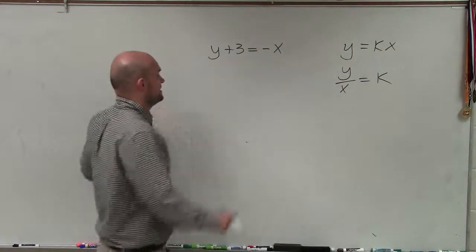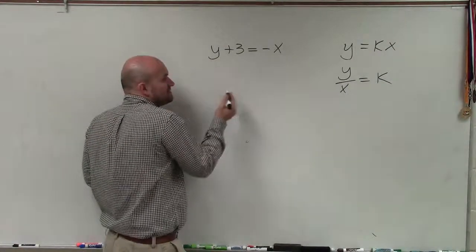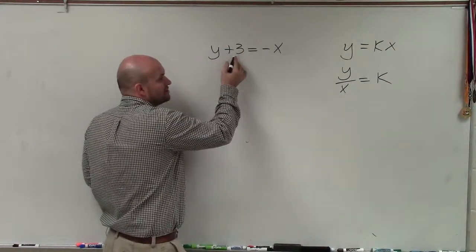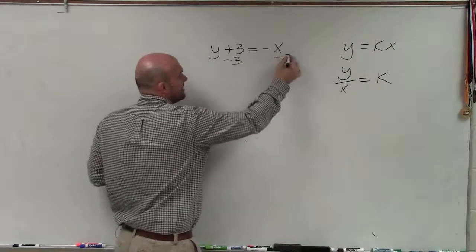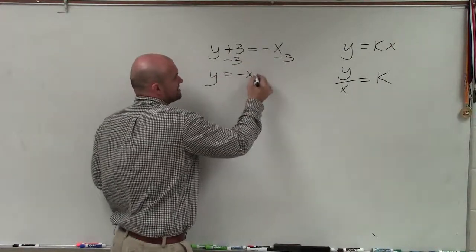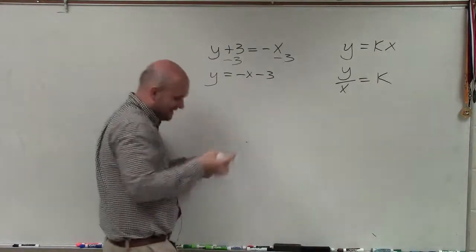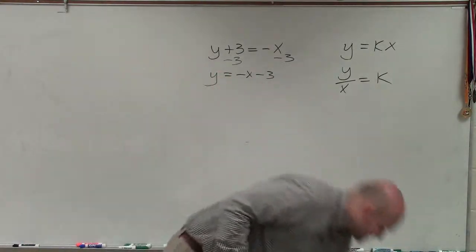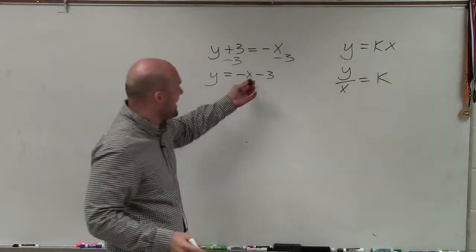And the reason why that's a red flag is because I can't get rid of this addition or subtraction. Because if I want to undo addition, I'd have to subtract 3. But I have to subtract 3 on the other side. So I'd have y equals negative x minus 3. Well, again, I can't rewrite subtraction for it to be somehow multiplied by my x.